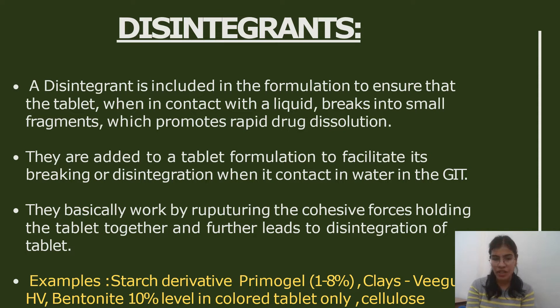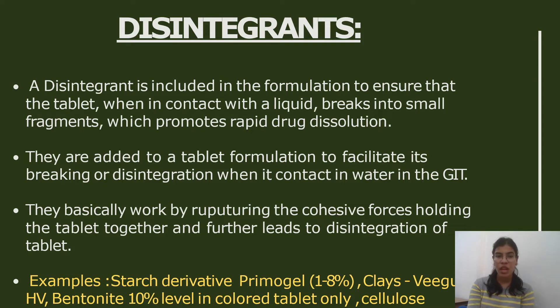Examples of disintegrants include starch derivatives, Primogel, some clays such as Veegum and bentonite, and cellulose-based disintegrants.